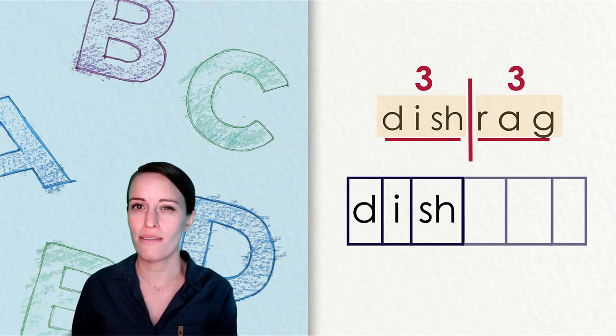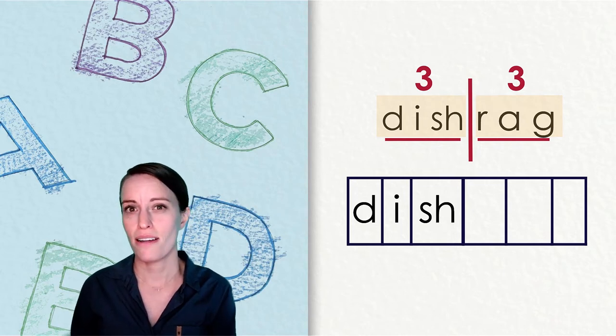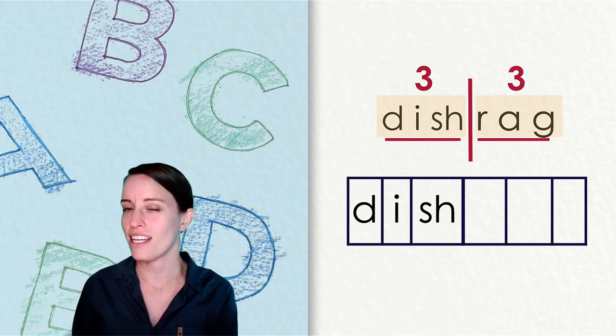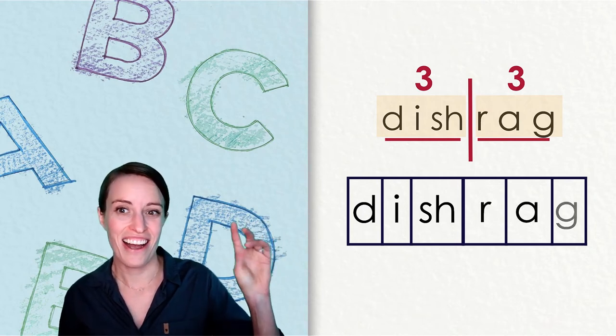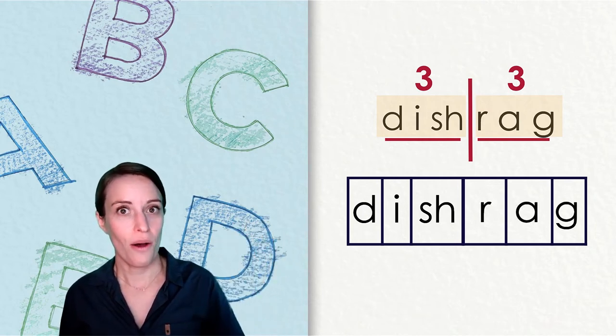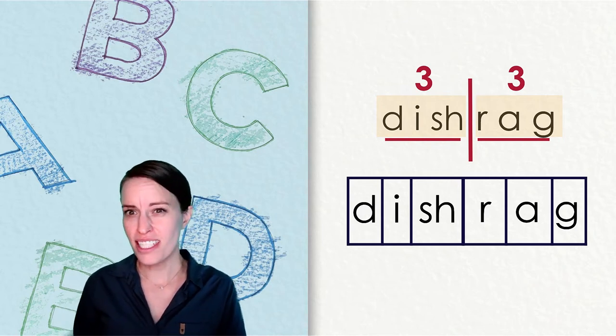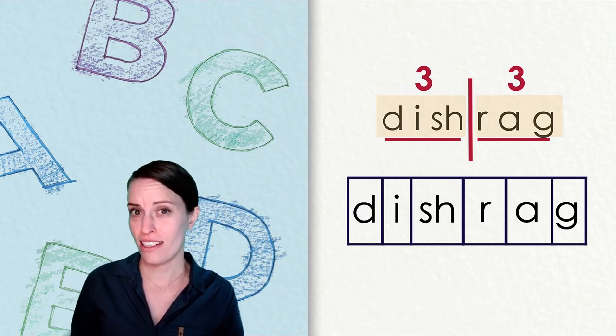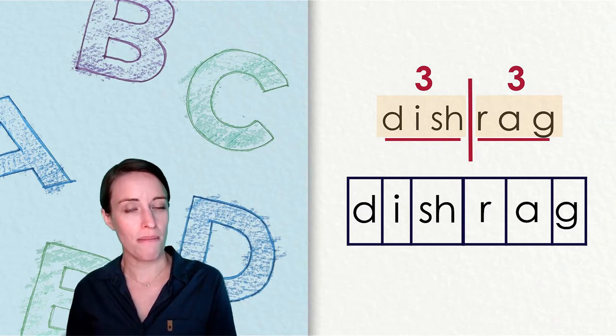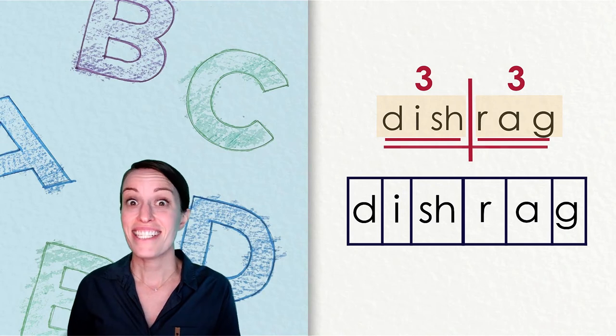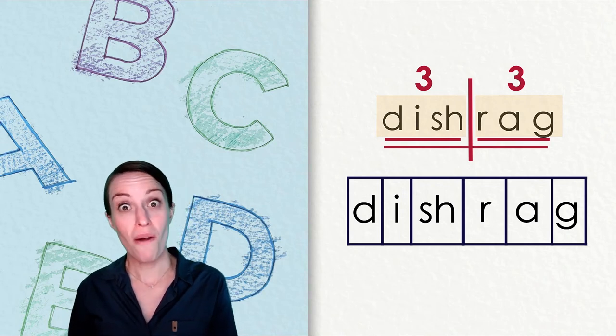Let's put those three sounds into our sound boxes now. You can point to the box where each sound belongs. R-A-G. Rag. Okay. Our first syllable was dish and the second was rag. When we put that together, what do we make? Dishrag. Nice work.